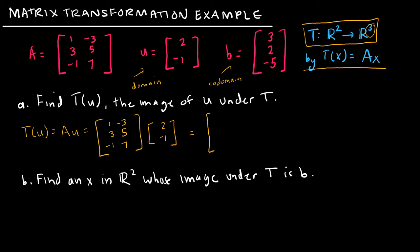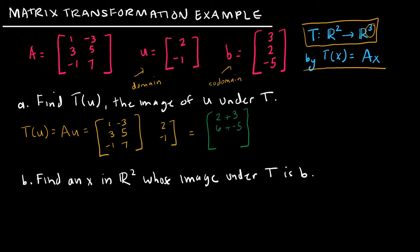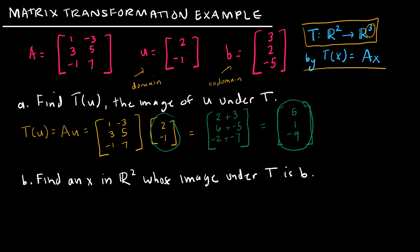I'm just doing matrix multiplication. So: 1 times 2 plus negative 3 times negative 1; then 3 times 2 plus 5 times negative 1; then negative 1 times 2 plus 7 times negative 1. I end up with the vector [5, 1, -9]. What I've done is taken [2, -1] and mapped it to [5, 1, -9] — something in R2 mapped to something in R3.